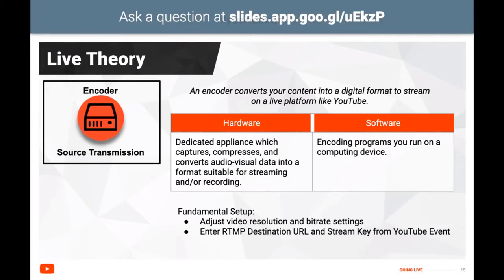In the setup process, you need to adjust the video resolution and bitrate settings according to the platform recommendations and your requirements. You'll also need to enter the RTMP destination URL and stream key, which tells the encoder where to send the feed — to YouTube — and how to uniquely identify that feed, which is your unique stream key. This stream key is unique to the live event and you should keep it private as you would any other password.